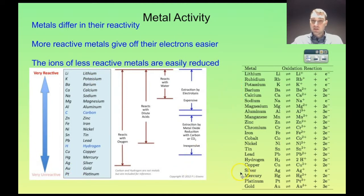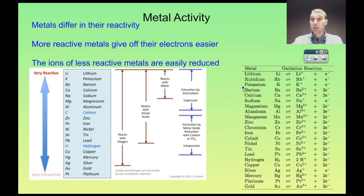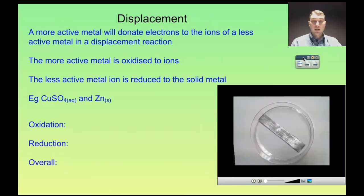Metals down the bottom — let's have a look at silver, for example. Silver ions reduce relatively easily, and that means it's somewhat easy to find silver as native silver in the environment. Whereas you never find potassium lumps in the dirt — potassium is very reactive, so it reacts with things. Whereas silver doesn't react, so it's very easy to find. So let's talk about displacement reactions.